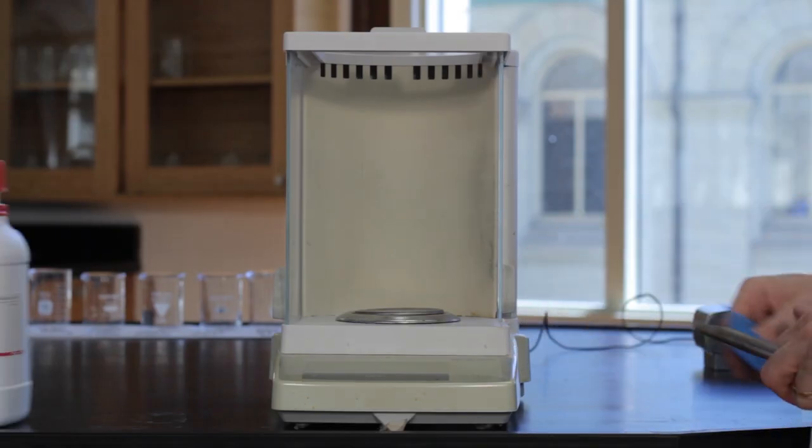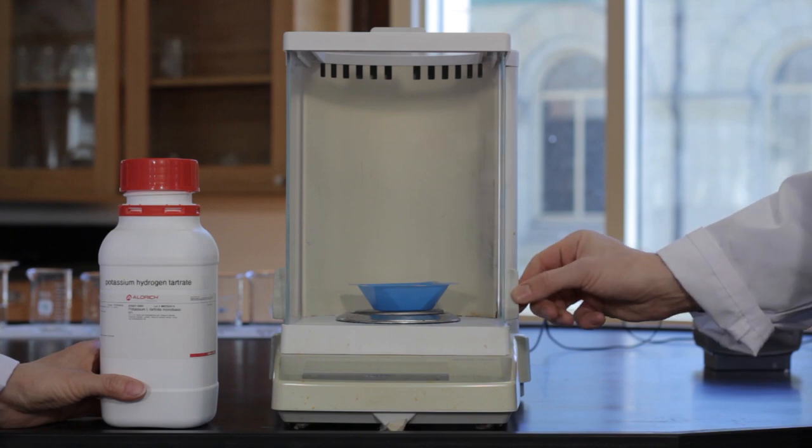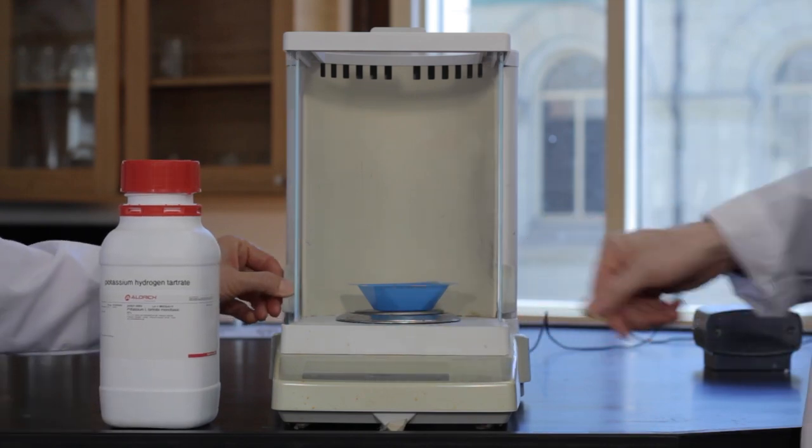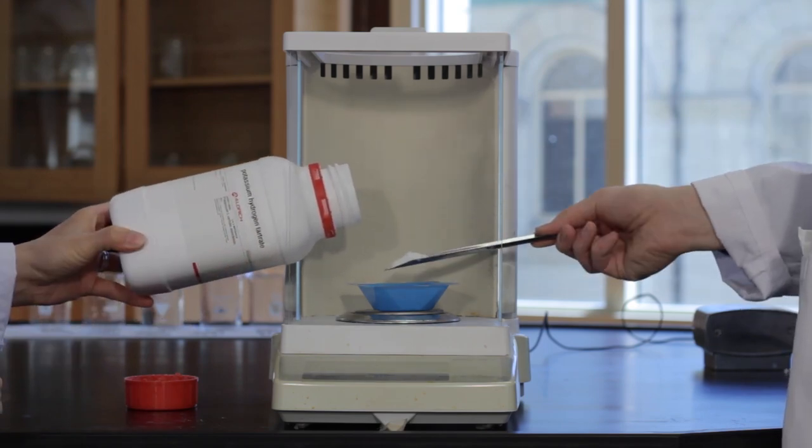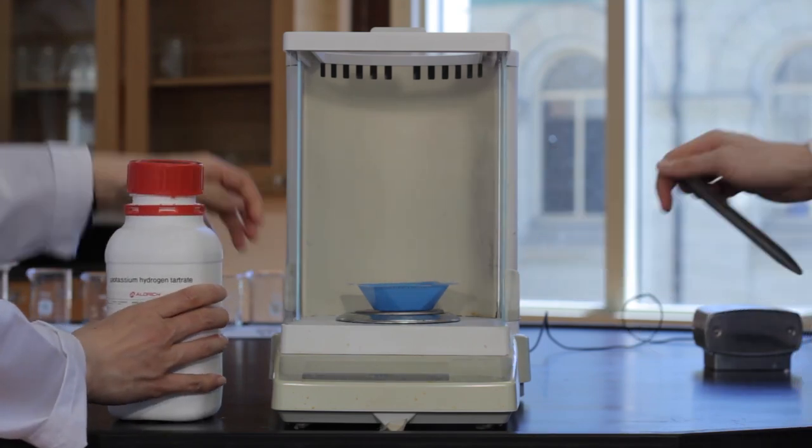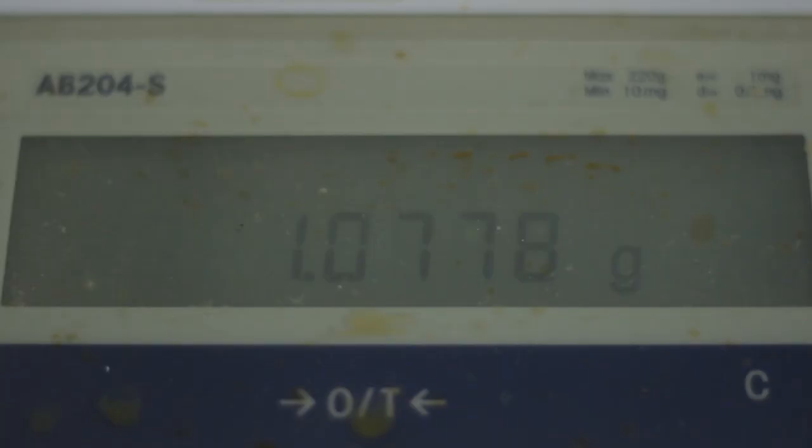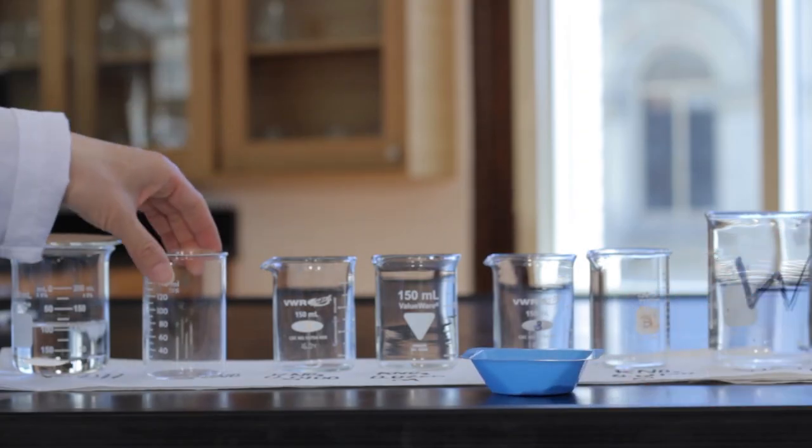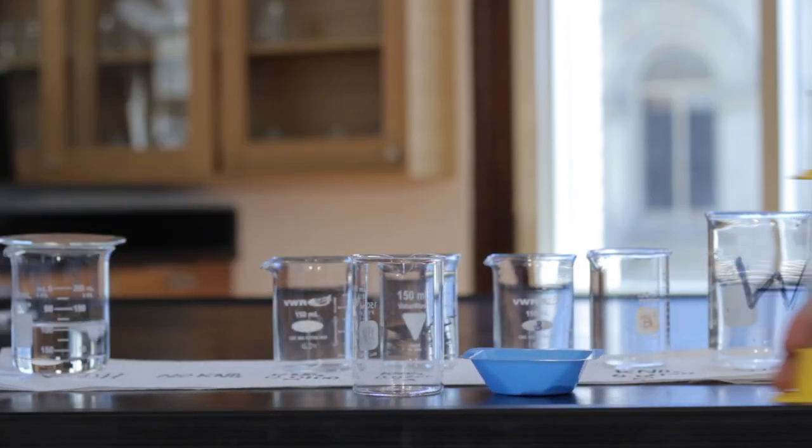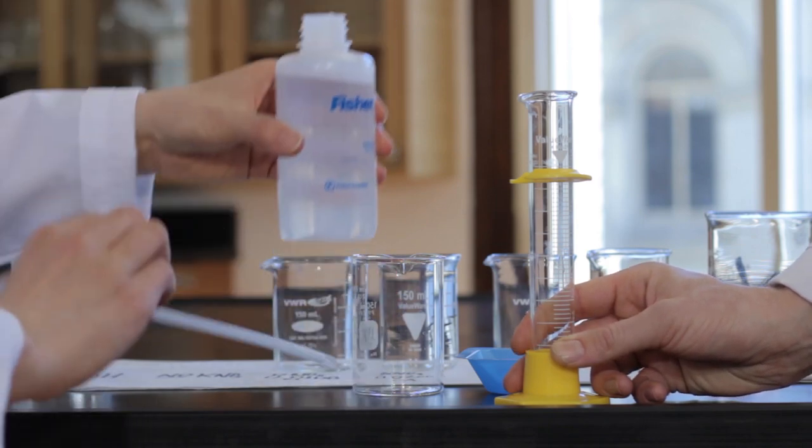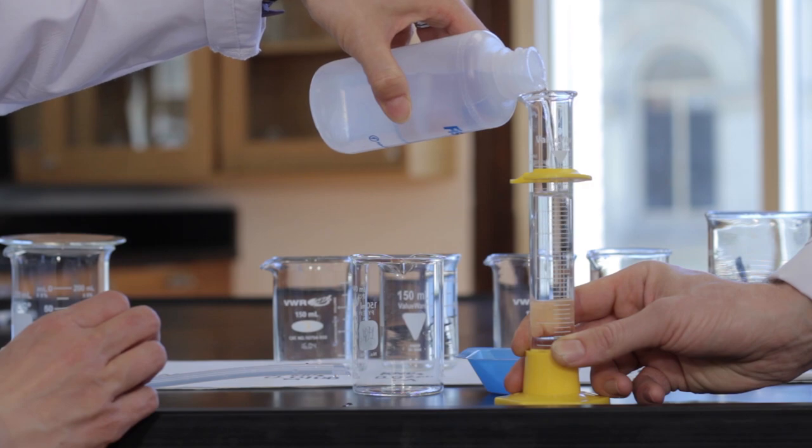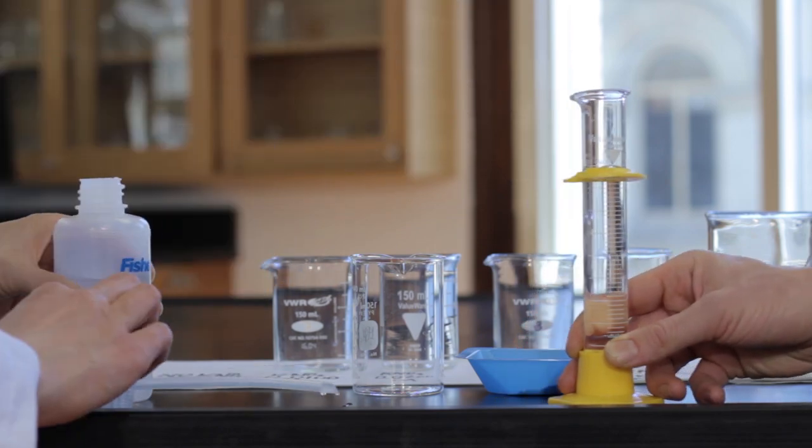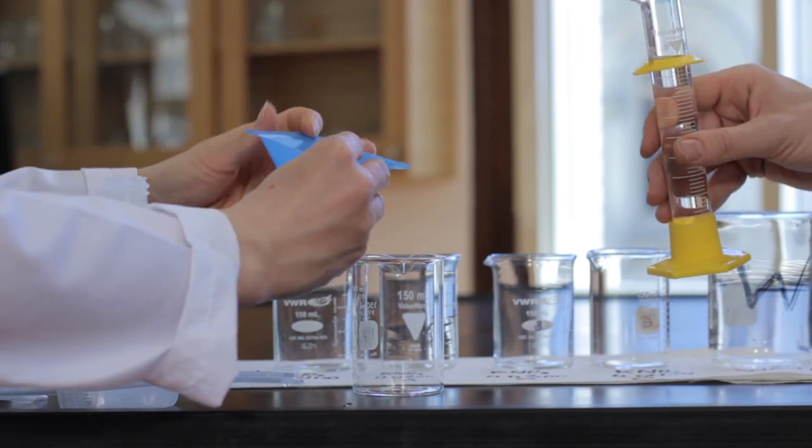Weigh out approximately 1 gram of potassium hydrogen tartrate. Transfer the solid into a clean, dry beaker.